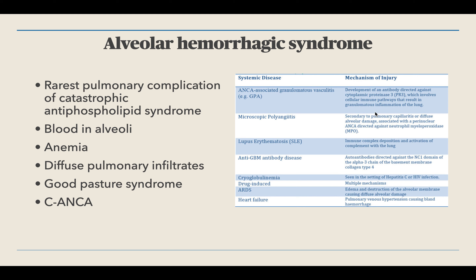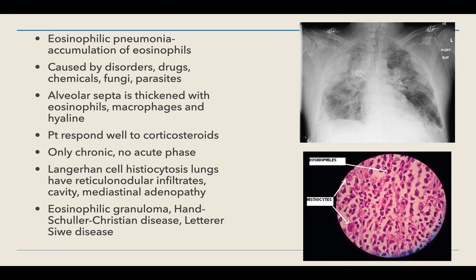Alveolar hemorrhagic syndrome is usually a complication of catastrophic antiphospholipid syndrome, stemming from Wegener's or systemic lupus erythematosus. Other systemic diseases include ANCA-associated granulomatous vasculitis, which causes granulomatous inflammation of the lungs leading to restrictive lung disease; microscopic polyangiitis affecting alveoli and pulmonary capillaries; SLE with immune complex deposition; anti-GBM antibody disease (Goodpasture's); and drugs and heart failure. Eosinophilic pneumonia involves accumulation of eosinophils, thickening of alveolar septa with macrophages and eosinophils, and hyaline membrane deposition.